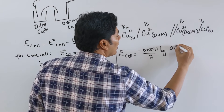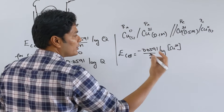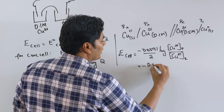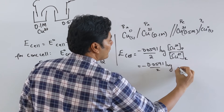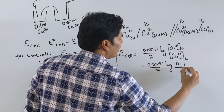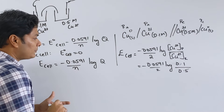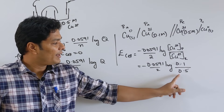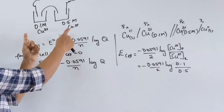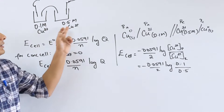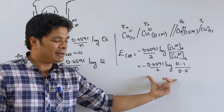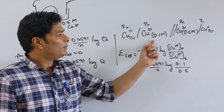Log(0.1/0.5) = log(1/5) = −log 5. Minus times minus is plus, so this cell is going to be spontaneous. If I gave you 0.5 here and 0.1 here, you would be forming more product than you're consuming — that would not be spontaneous. Intuitively: the higher-concentration side goes down and lower-concentration side goes up until they meet at equilibrium.